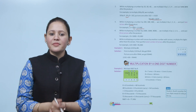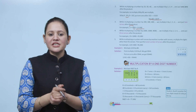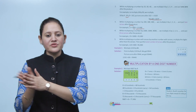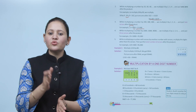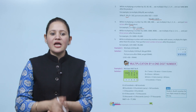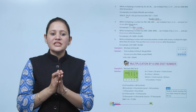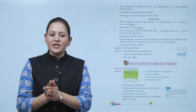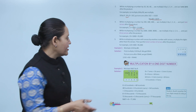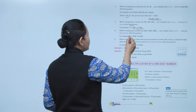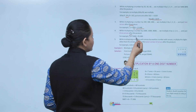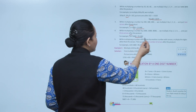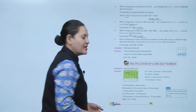When multiplying a number by 2000, 3000, 4000, and so on, multiply by 2, 3, 4 and put three zeros after the product. For example, 19 into 5000: multiply 19 by 5 and put three zeros — the answer is 95,000.